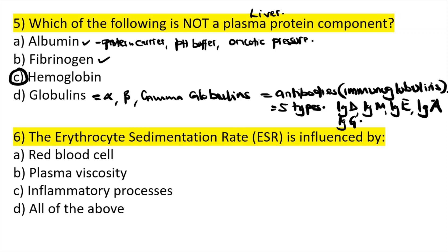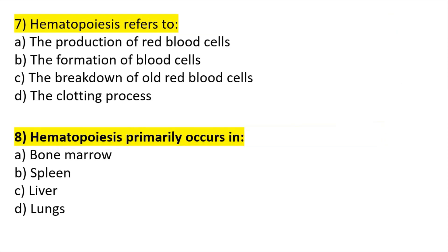Question six: the erythrocyte sedimentation rate is influenced by red blood cells, plasma viscosity, and inflammatory processes — mostly inflammatory processes.